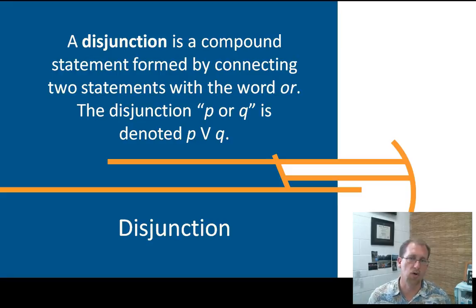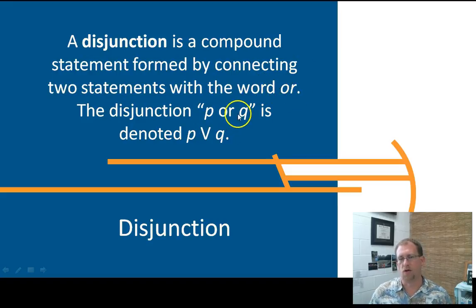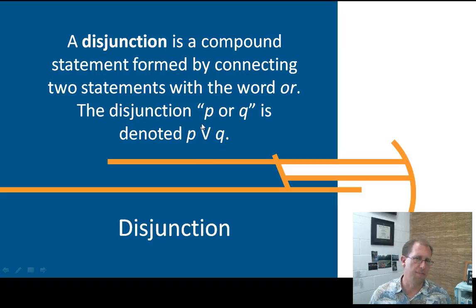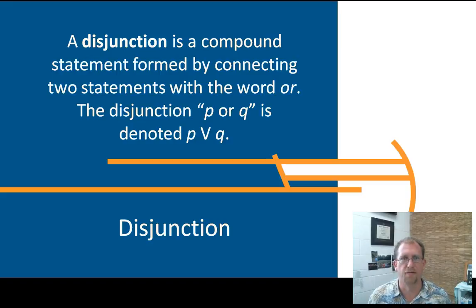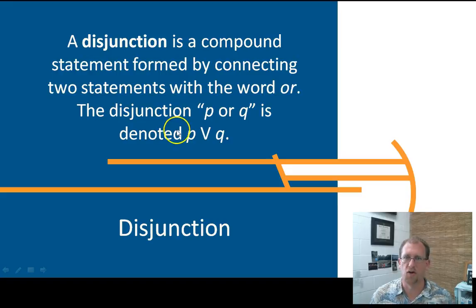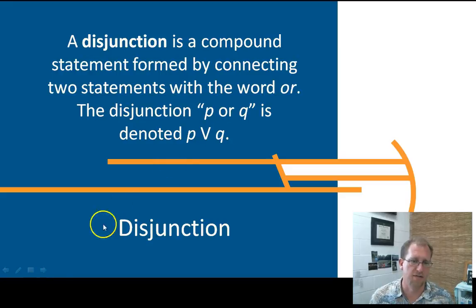That's different than a disjunction. A conjunction is an 'and' statement; a disjunction is an 'or' statement. A disjunction is a compound statement formed by connecting two statements with the word 'or.' P or Q is written as P with a symbol that looks like a capital V — it's just the upside-down version of the 'and' symbol — and it means 'or.' In order for a disjunction to be correct, either P or Q has to be true.